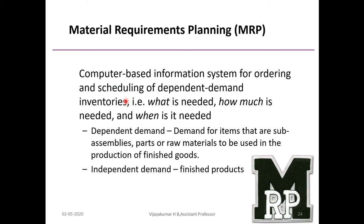MRP is a computer-based information system for ordering and scheduling of dependent demand inventories — determining what is needed, how much is needed, and when it is needed. MRP mainly depends on dependent demands and independent demands. Independent demand refers to the final finished product, while dependent demand refers to the raw materials, assemblies, and components which are used to make the final product.